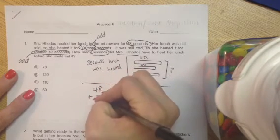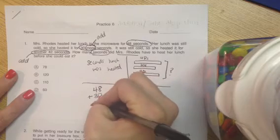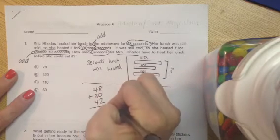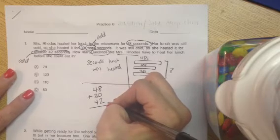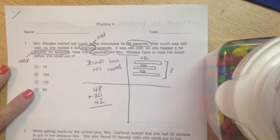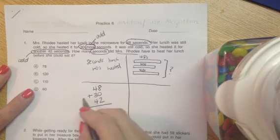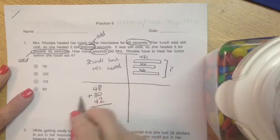48 plus 30 plus 42. Now I tell the students that they can stack addition, but they cannot stack subtraction. So sometimes that confuses them. You want to make sure that if it's addition, it's okay, but not subtraction.